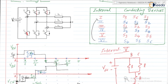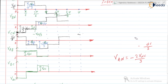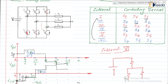Similarly, for the 6th interval, switch numbers 4, 5, and 6 will be in the ON state, and switch number 3 will be in the OFF state. So 4, 5, and 6 are ON. During this interval, phase A is connected to the negative plate, phase B is connected to the negative plate of VDC, and phase C is connected to the positive plate of VDC.